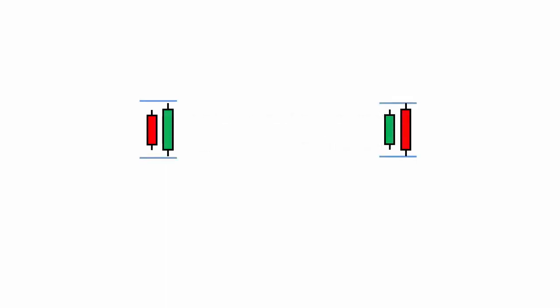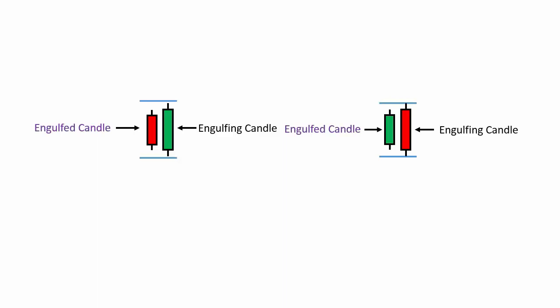Engulfing candlestick patterns are very powerful in a price action chart to indicate market reversal. Engulfing candlesticks are those whose total range engulfs or covers the previous candle's range. The big candle which engulfs the previous candle's range is called the engulfing candle, and the small candle which has been engulfed by the big candle is called the engulfed candle.